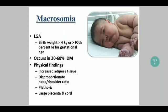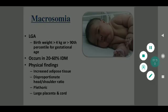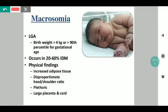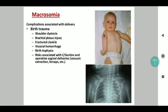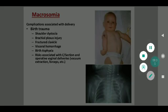Macrosomia is the most recognized complication of IDM, defined as large for gestational age — namely, birth weight more than 4 kg or above the 90th centile for gestational age. Macrosomia is associated with almost 60% of all IDM babies. Physical findings include increased adipose tissue and a disproportionate head-to-shoulder ratio. The baby is likely to be plethoric with an abnormally large placenta and cord. Macrosomia is commonly associated with birth trauma, an increased risk of brachial plexus injuries, birth asphyxia, and prolonged resuscitation at birth.